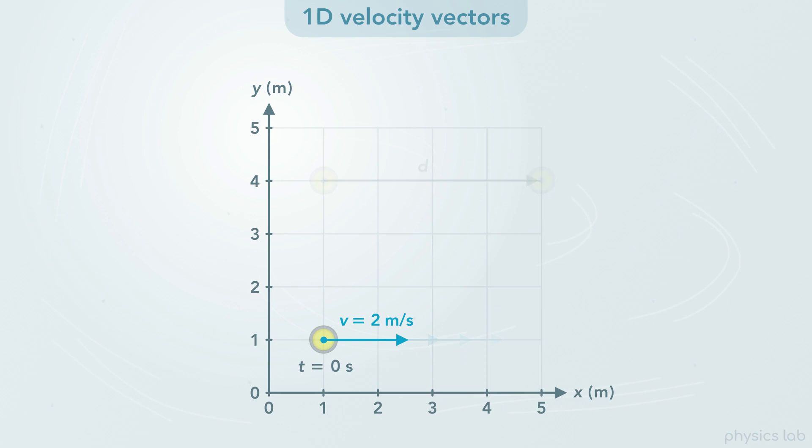But when we draw a velocity vector, we usually represent the instantaneous velocity of an object. That means we're describing the magnitude and direction of the velocity at one point, one instant in time. This also means that the velocity vector is not tracing out the path of the object. It's showing the direction of motion at one instant in time. That'll make more sense later on.